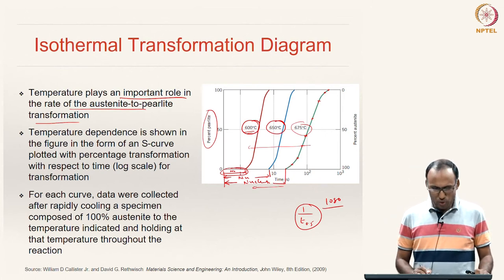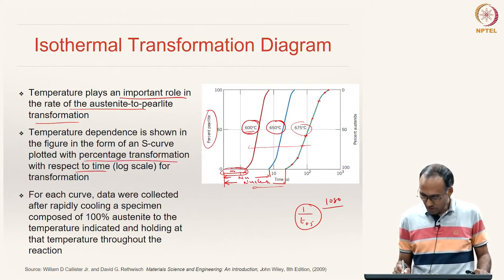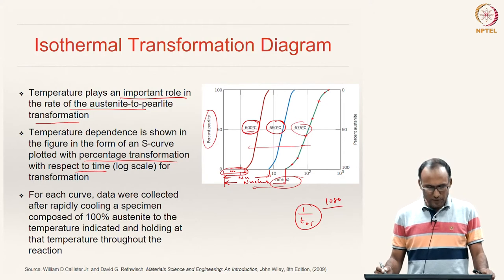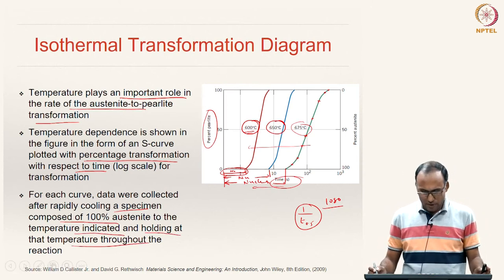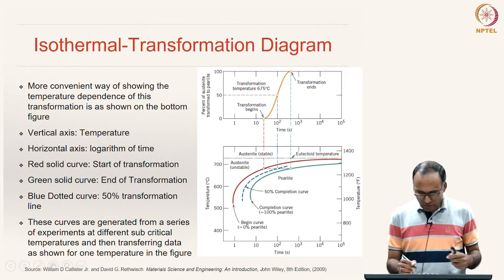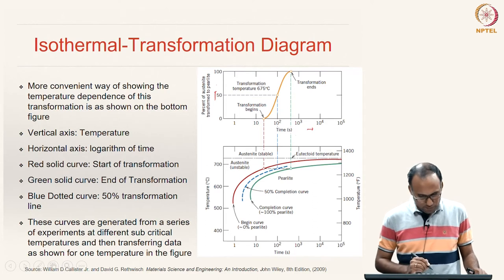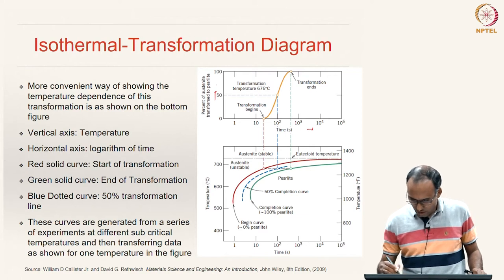The temperature dependence is clearly shown in this figure as S-curves plotted with percentage transformation versus time on a log scale, because the times can be very large. For each curve, data is collected after rapidly cooling a specimen of 100% austenite to the indicated temperature and holding it throughout the reaction. There is a more convenient way of displaying this information than showing separate S-curves at different temperatures.